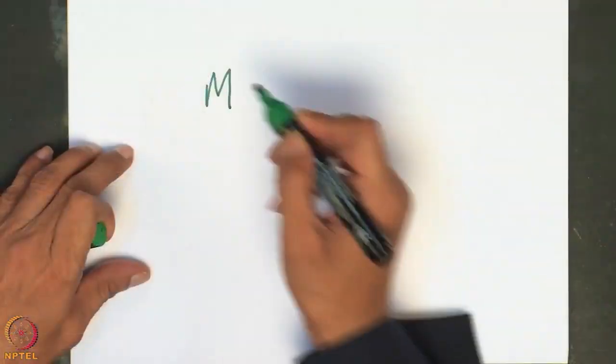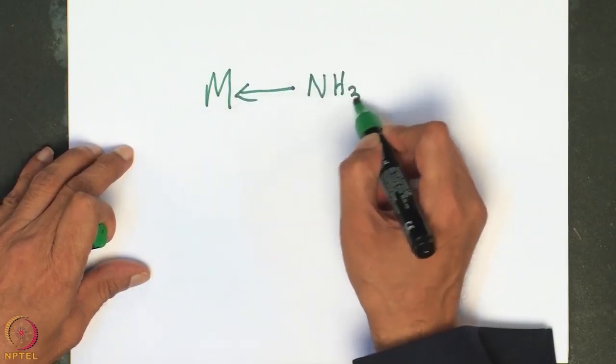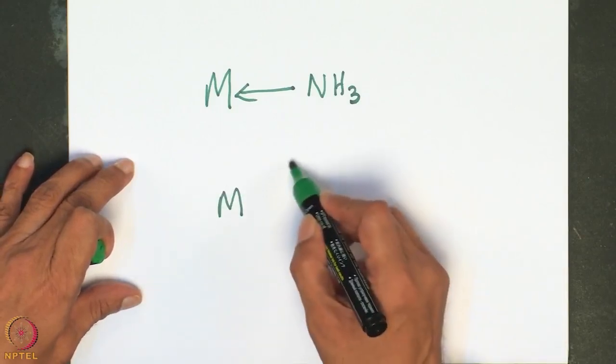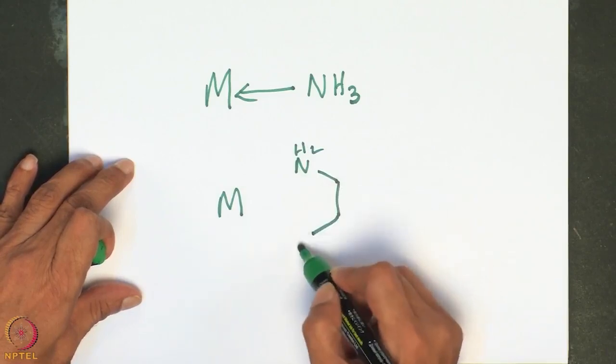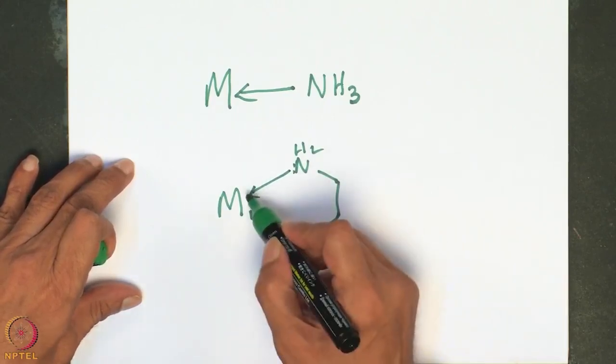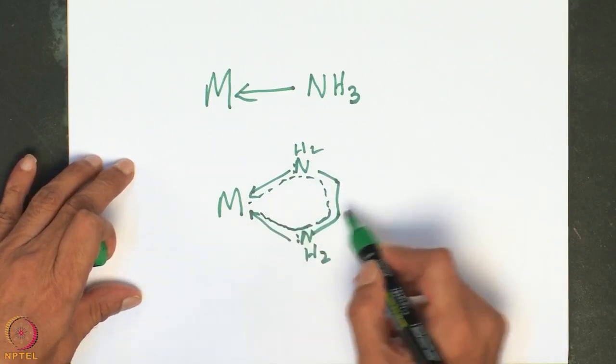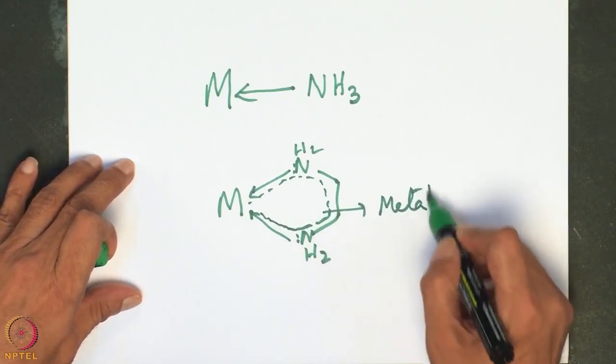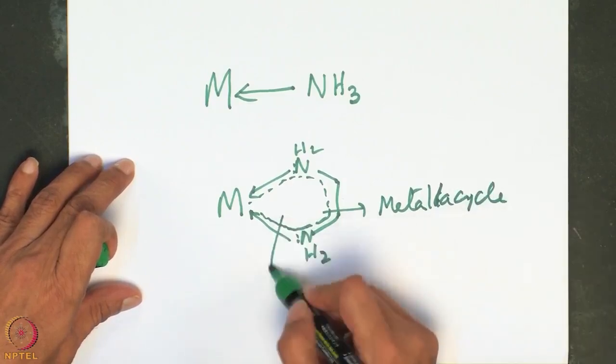We discussed that a ligand can act as monodentate or bidentate/multidentate. When a ligand acts as bidentate and both centers are bound simultaneously, it forms a chelate — also called a metallocycle in organometallic chemistry. With a monodentate ligand, you have only one bond. With a bidentate ligand, you form a cyclic structure, and this is called a chelate.